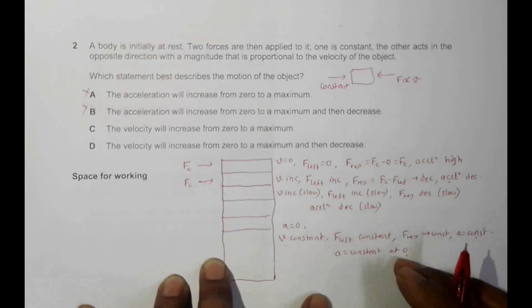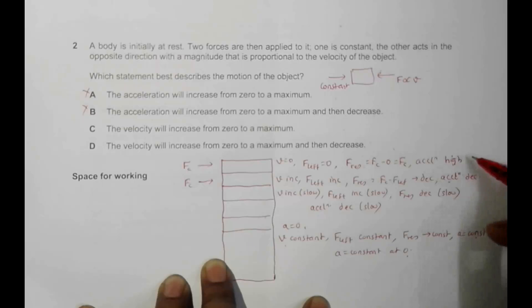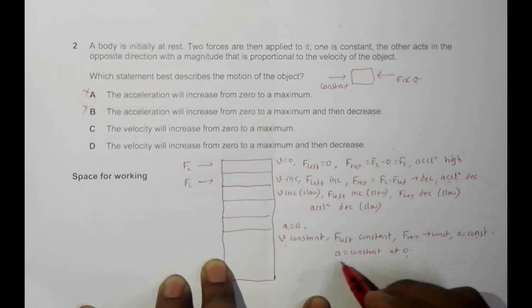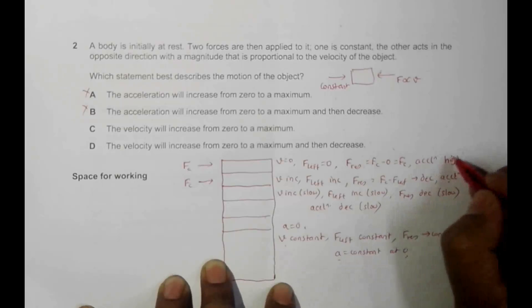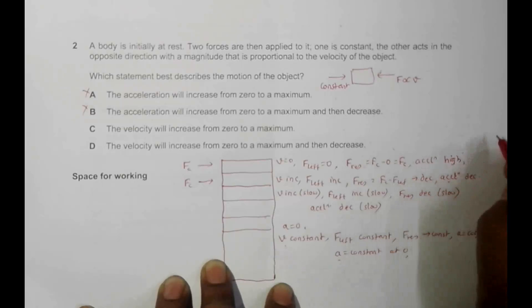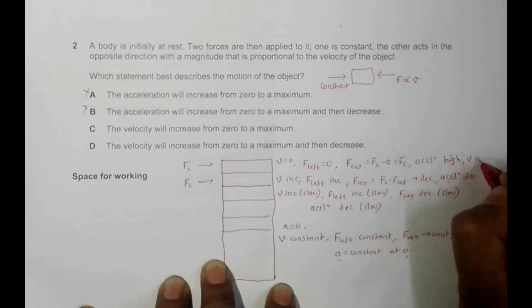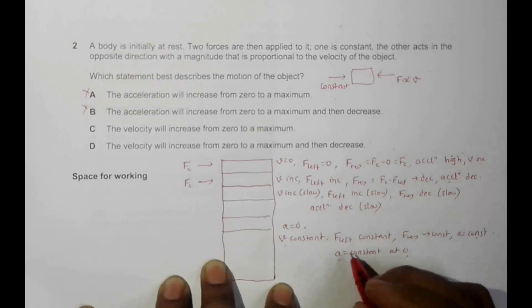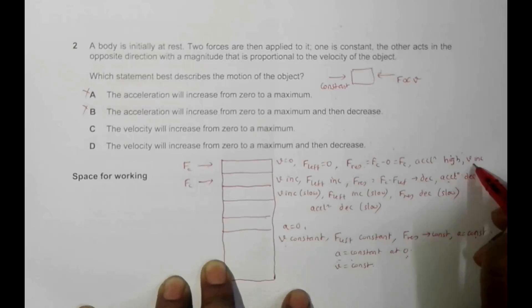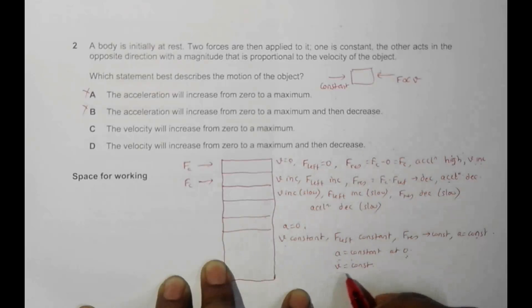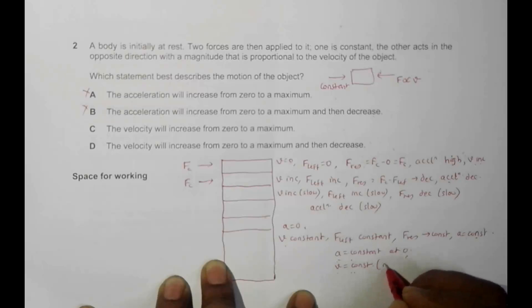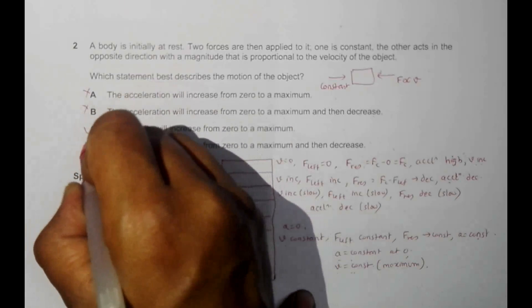Once A reaches zero and remains constant at zero, V also remains constant. This means initially velocity was increasing from zero, but later it becomes constant — and at that point it is also at its maximum. So the correct answer is choice C, not choice D.